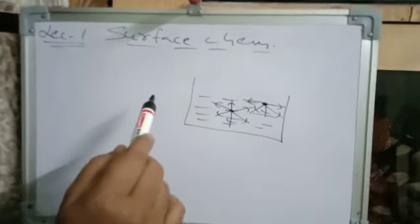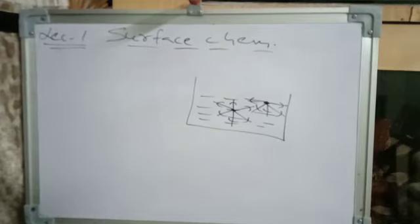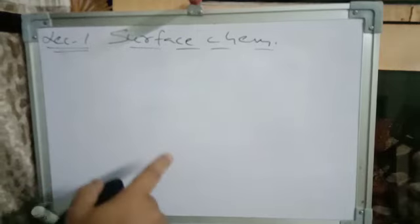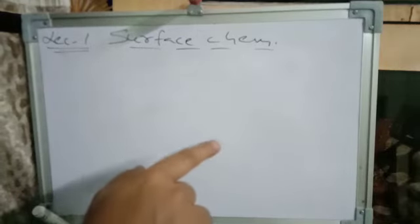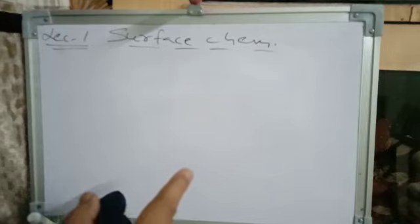Today we will study Surface Chemistry. The key topic is adsorption — not absorption, but adsorption. If we use chalk on ink, the chalk surface adsorbs the ink. This is the best example to differentiate between adsorption and absorption.